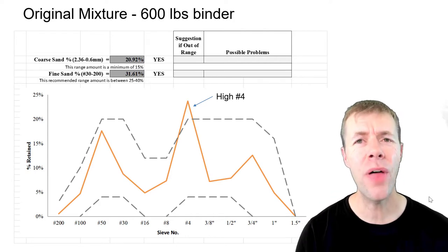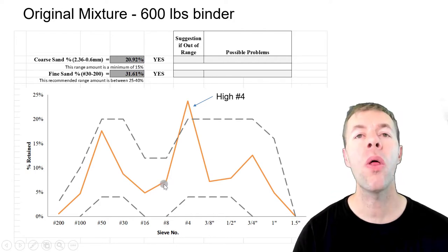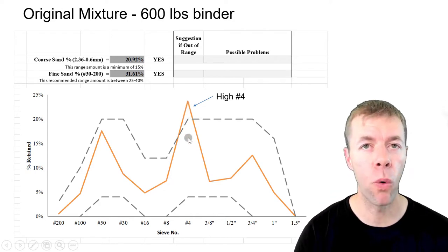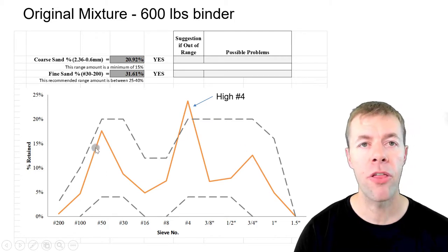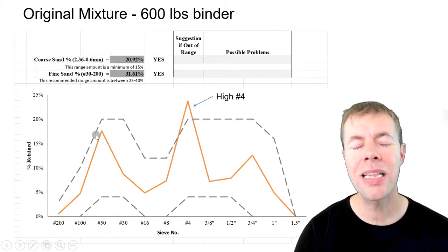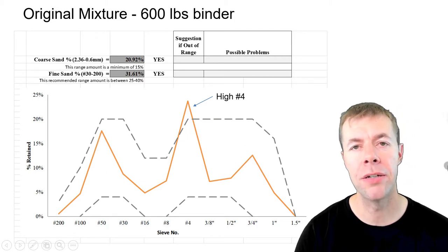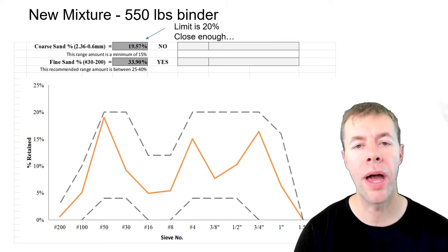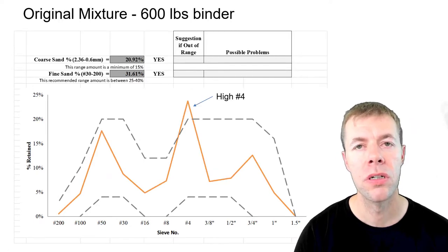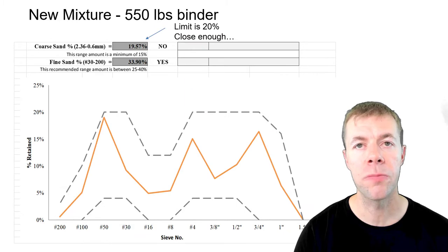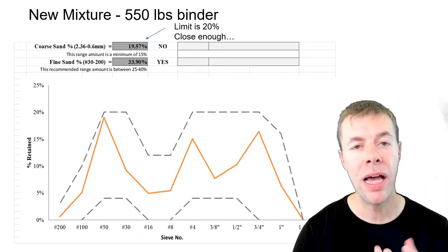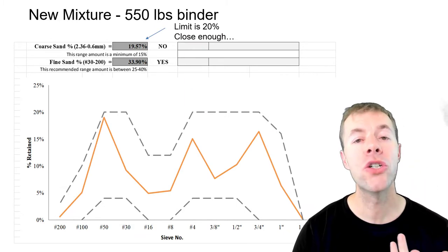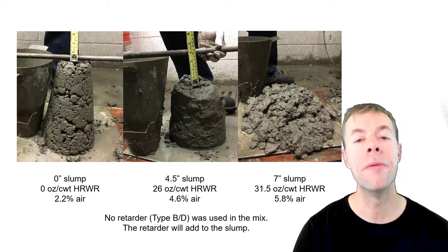So how did I do that? I dropped the amount of number 4 and increased the amount of three-quarters and a little bit of sand. This is what my mix design looked like — this was theirs, this was mine. Totally designed just conceptually, and I said we need to trial batch it. So they did.